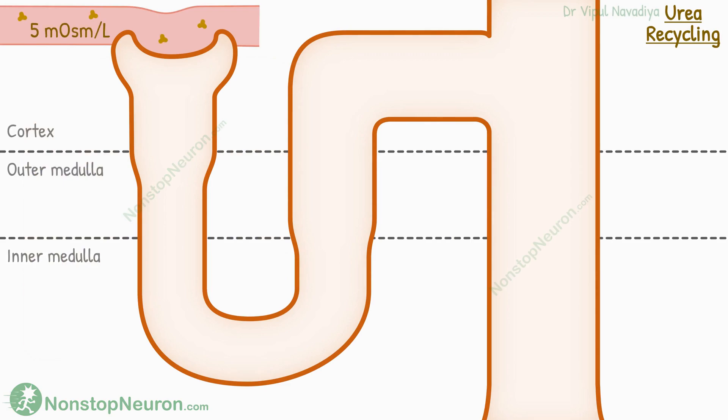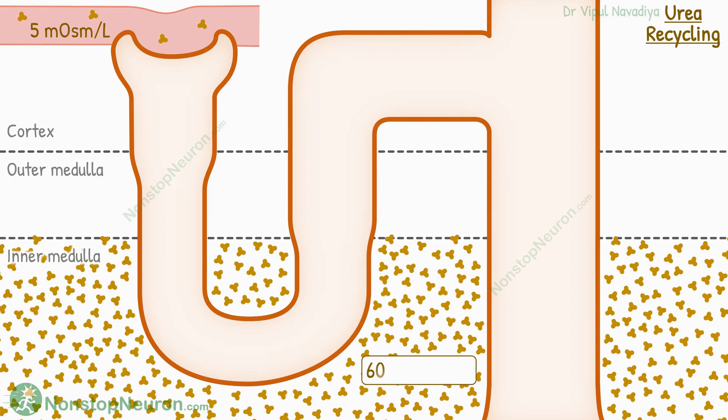Normal urea concentration in plasma is about 5 milliosmoles per liter. But at the tip of the pyramid, it gets concentrated up to 600 milliosmoles per liter. But how does it get concentrated there? And what is its importance? That's what we will see in this video.